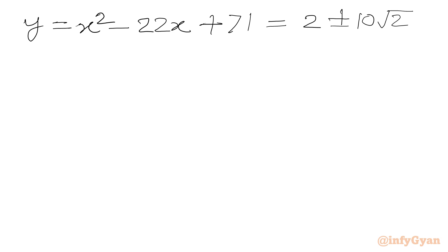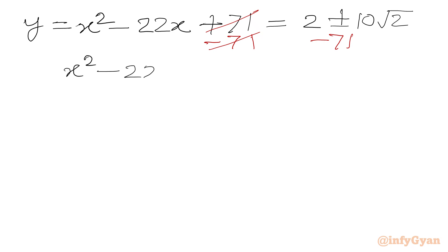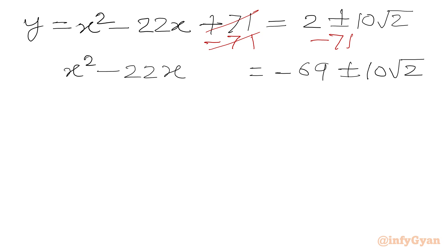Now we have to solve one quadratic equation. If we use the factorization or quadratic formula method, it is not going to be easy. So we are going to use the completing the square method. I will subtract 71 from both sides. Then I will add 121 — the square of half the coefficient of x. Half of 22 is 11.